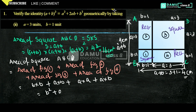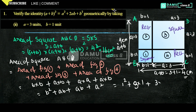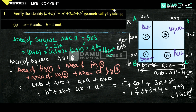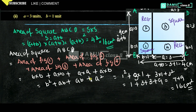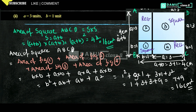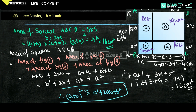That will be equal to B² + AB + AB + A². Substituting values: B is 1, so 1² = 1; A into B is 3 into 1 = 3; A² is 3² = 9. So 1 + 3 + 3 + 9 = 16 centimetre square. Left-hand side equals right-hand side. Therefore, (a + b)² is identically equal to a² + 2ab + b², verified geometrically using figures.